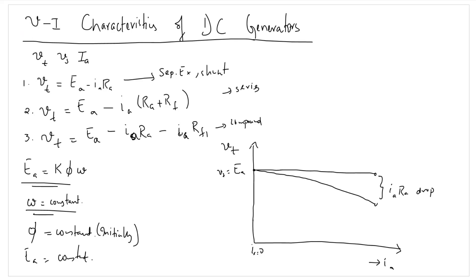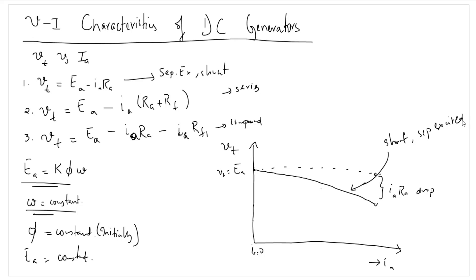VT will have a graph where this portion denotes the IA·RA voltage drop. As IA increases, IA·RA increases, so VT will constantly fall with respect to IA. I will show EA by a dotted line. This is the characteristics of a shunt and a separately excited DC generator — a simple DC voltage EA and as we load the system VT slightly falls due to IA·RA drop.